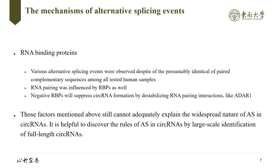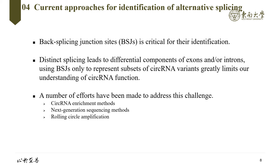It is helpful to discover the roles of alternative splicing in circular RNAs by large-scale identification. Circular RNAs containing unique back splicing junction sites differ overwhelmingly from their host linear RNA counterparts, and hence the back splicing junction site is critical for their identification. Given that distinct splicing leads to differential components of exons or introns, using back splicing junction sites alone to represent subsets of circular RNA variants greatly limits our understanding of biogenesis, functions, and evolution of circular RNAs among species.